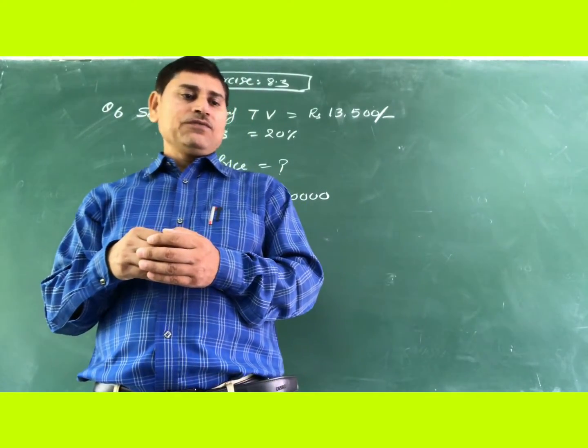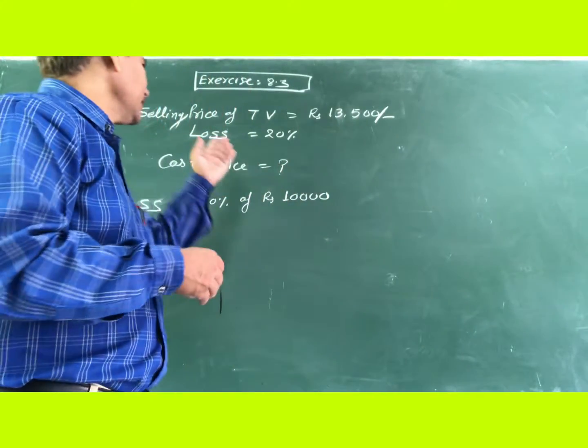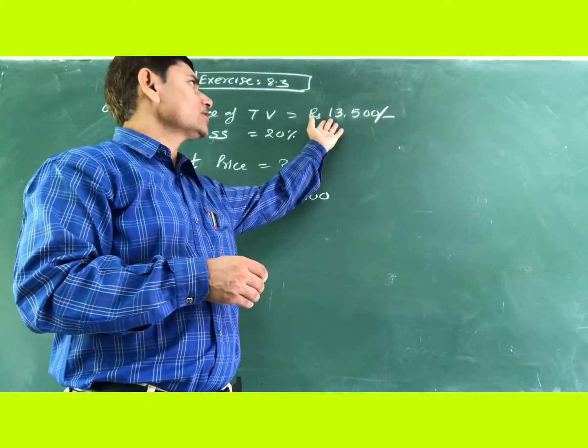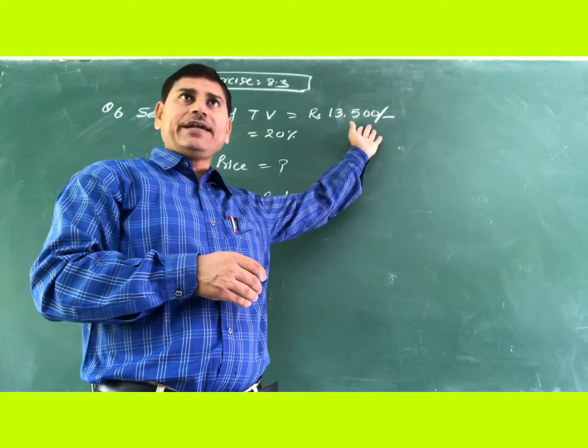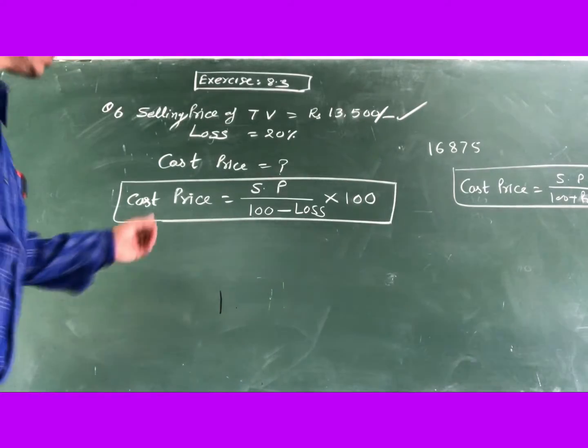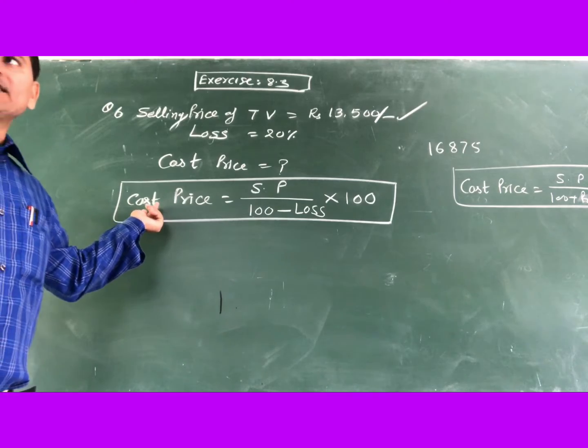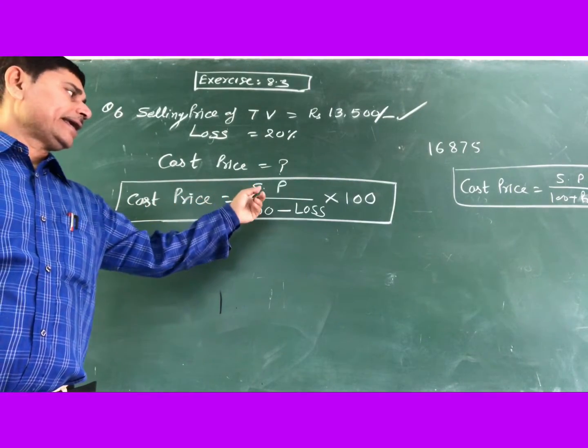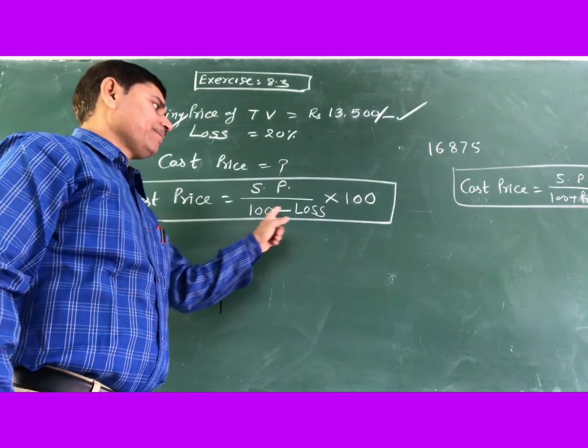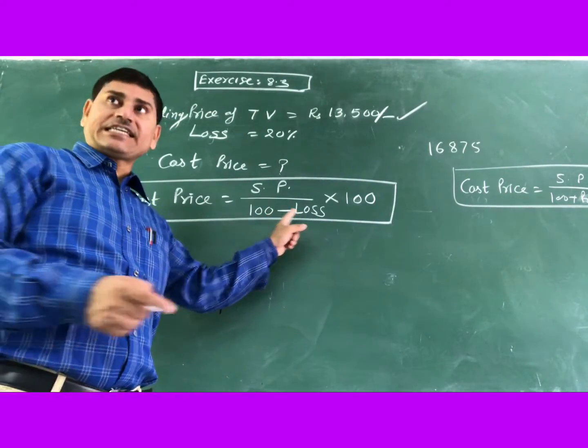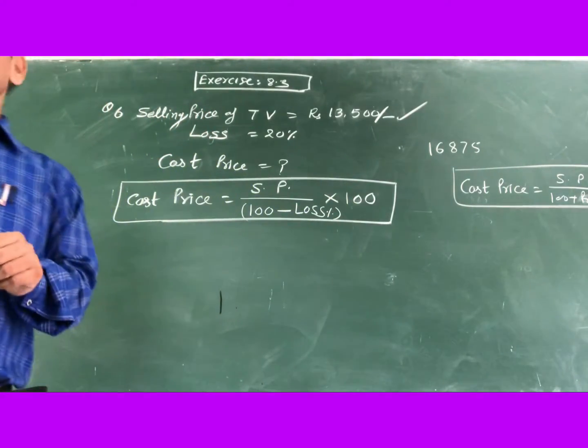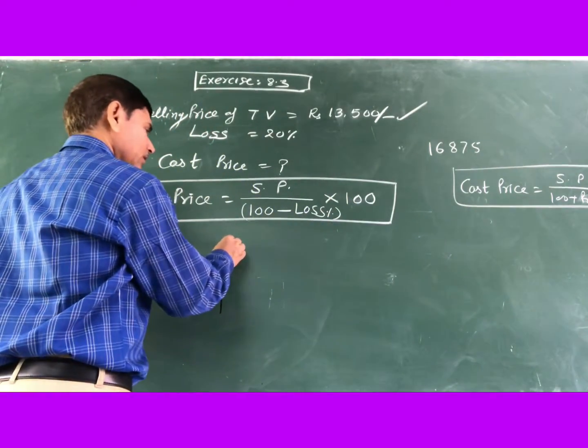So first of all, you will write that selling price of television is rupees 13,500 and the loss is given as 20 percent. For the cost price, you will use this formula: SP (selling price) divided by 100 minus loss percent, and multiply by 100.